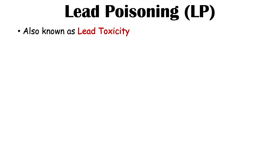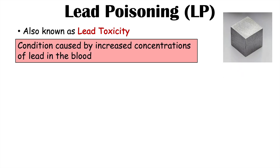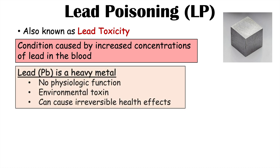Lead poisoning is also known as lead toxicity. It is a condition caused by increased concentrations of lead in the blood. Lead itself is a heavy metal. It's found in the environment — it's an environmental toxin — but it has no physiological function. However, when exposed to it, it can cause both reversible and irreversible health effects depending on what stage of life you are in when you are exposed to lead and how long you are exposed to lead.